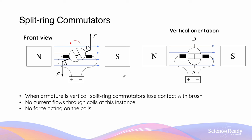Recalling the motor effect force equation — F = BIL sin theta — if there's no current flowing through the coils, there will be no force. So momentarily, when the armature is in this vertical position, there are no forces acting on the coils.